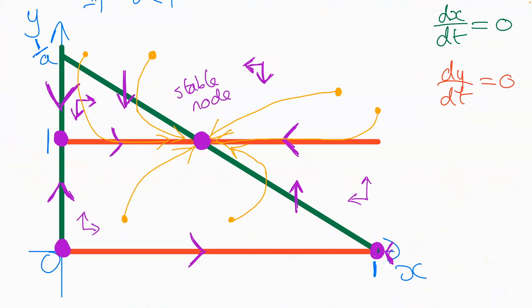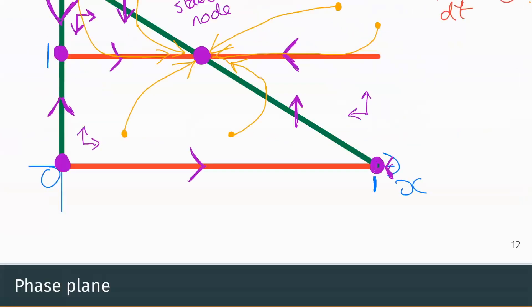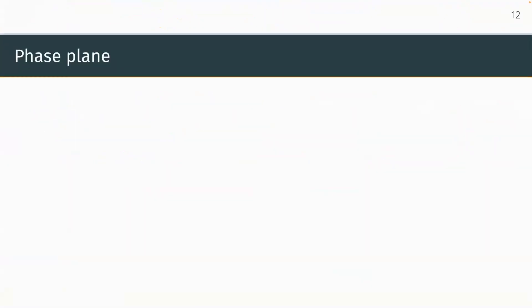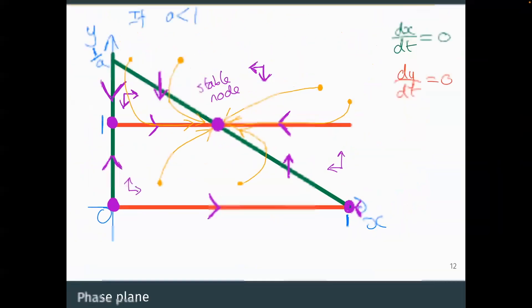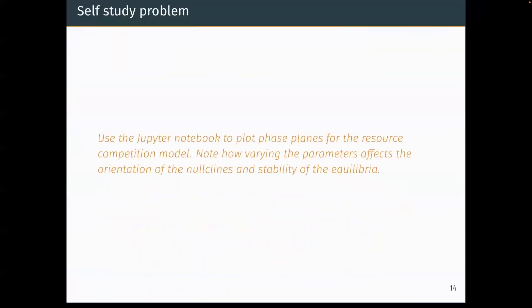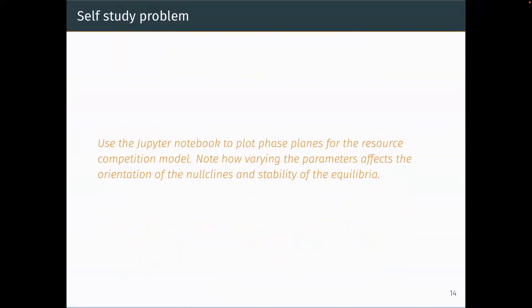For further practice, try sketching the phase plane for a > 1 — I'll post the solution in the field notes. There's also a Jupyter notebook on Canvas that lets you sketch phase planes for the resource competition model, varying parameters a and b. Sketch them by hand first, then use the notebook to check your answers. The notes also include the correct answers.